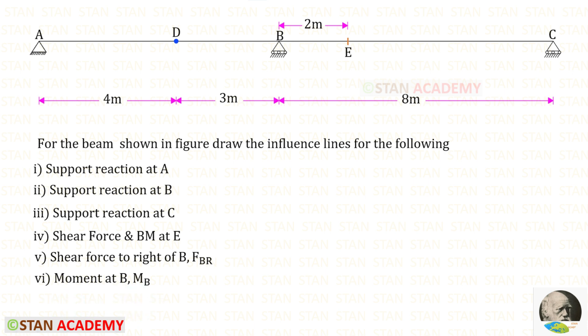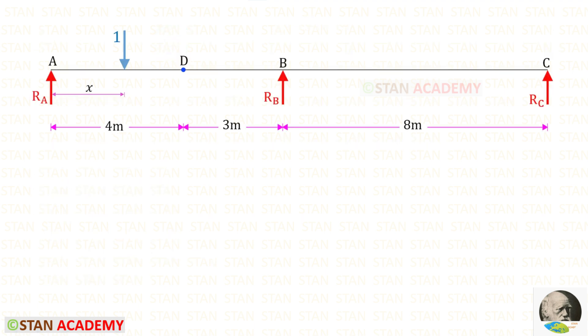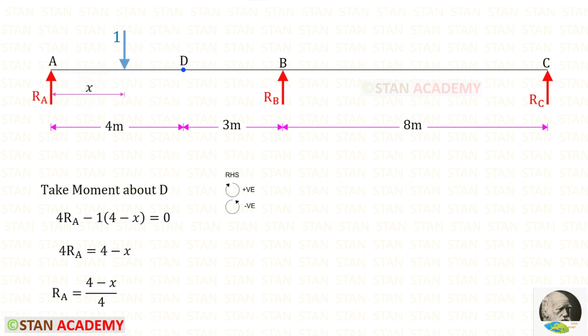In this beam, at point D there is an internal hinge. First, we are going to draw the influence line diagrams for the reactions. Initially, let us keep the unit load between A and D at a distance of X from point A. At point D, there is an internal hinge.